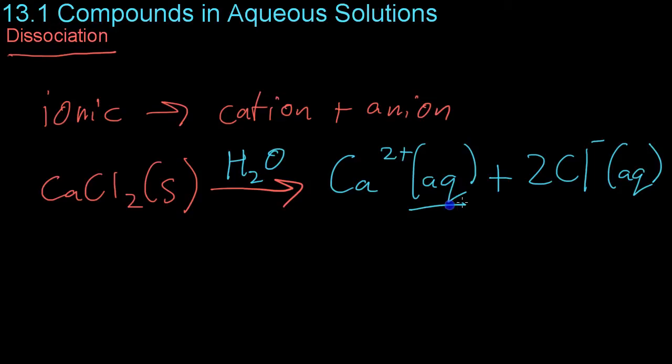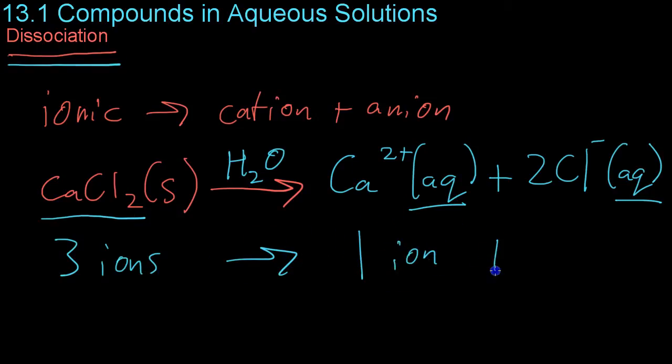Both of these are aqueous because they are dissolved into a water solution. And you'll notice that during this process of dissociation, one formula unit of calcium chloride, which contains three ions, will break up into one ion of calcium and two ions of chlorine.